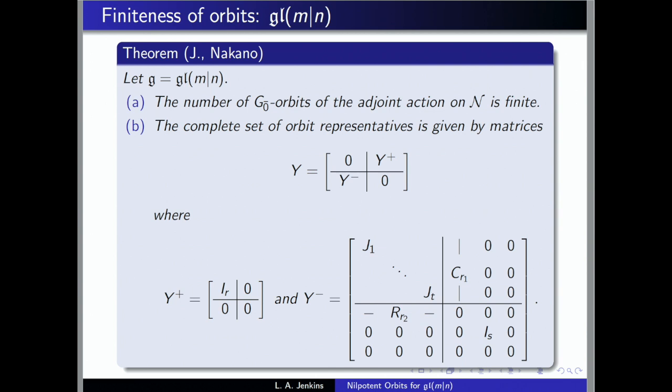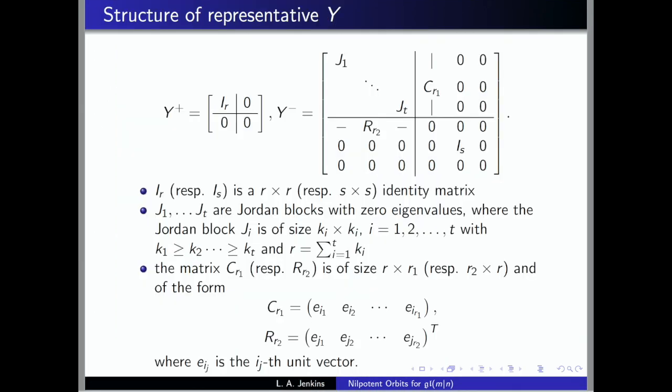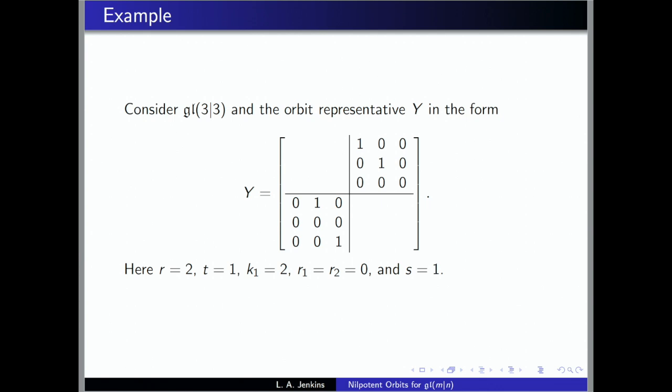Let me say more about the structure of those representatives and what all the parameters mean. The I's are just identity matrices. Y+ is the upper right block, and Y- is the lower left block. Y+ has a simple form, while Y- is slightly more complicated: you split it into Jordan blocks in the upper left—all with zero eigenvalues—and then column and row echelon form matrices in the other blocks, with an identity matrix in the bottom right.